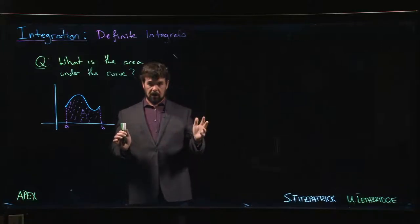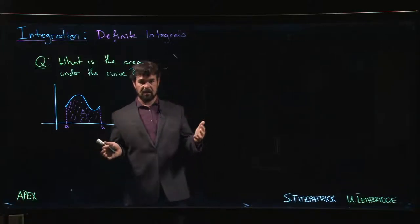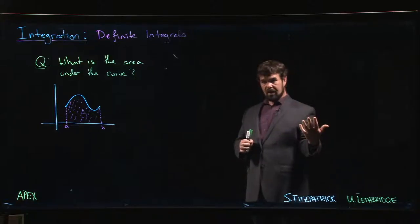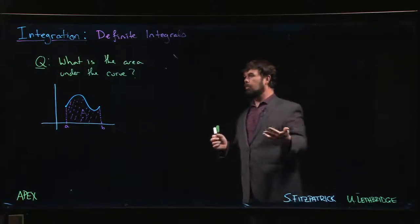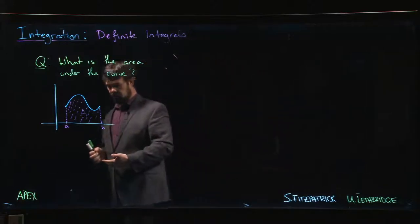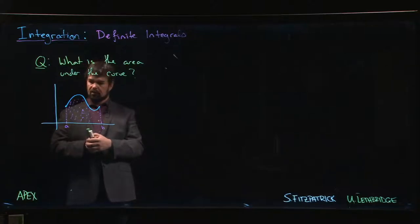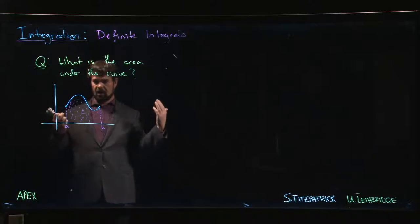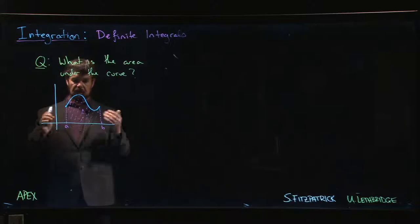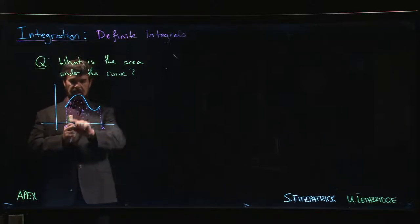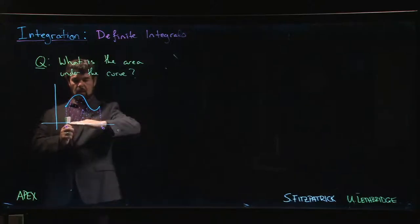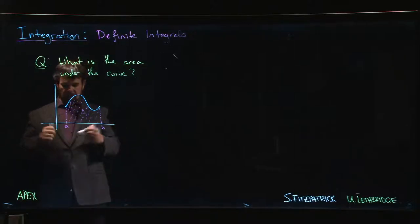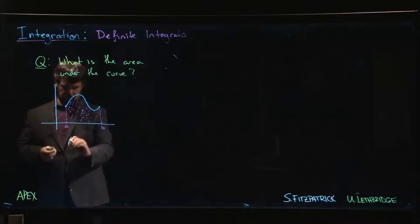We're going to move on and look at definite integrals. We've seen indefinite integrals, which is just a fancy way of talking about antiderivatives. We're going to start with this motivating question: you've got a curve — the graph of some continuous positive function — between x equals a and x equals b. How much area is contained in the region between x from a to b, and y between zero and the curve?